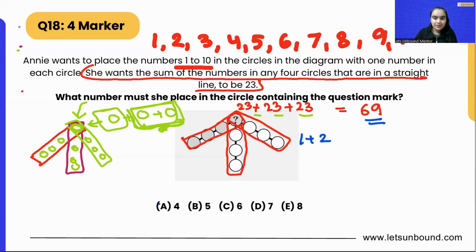We got the total sum of all three lines as 69. Can you tell me what is 1 plus 2 plus 3 plus 4 plus 5 plus 6 plus 7 plus 8 plus 9 plus 10? Basically we are adding all these numbers. If we add all these numbers, we get the sum as 55.